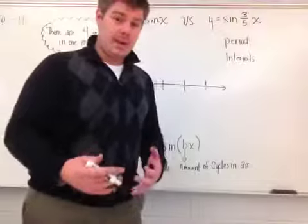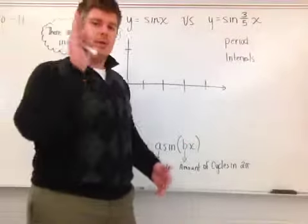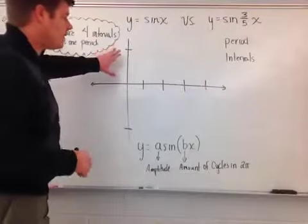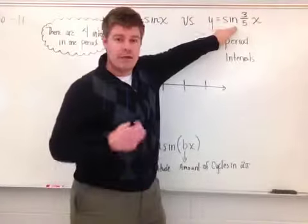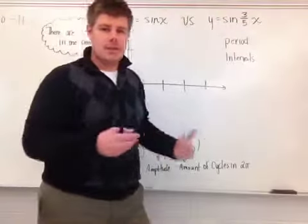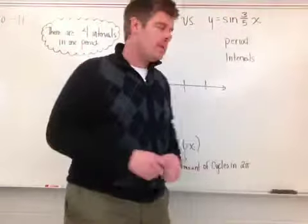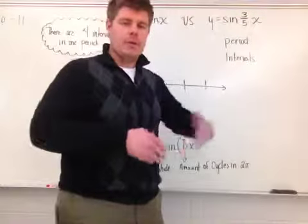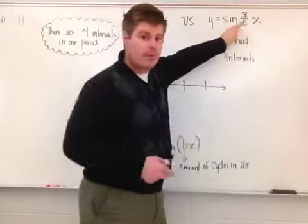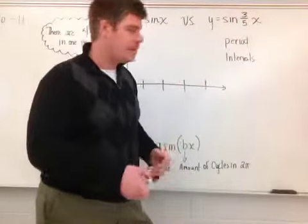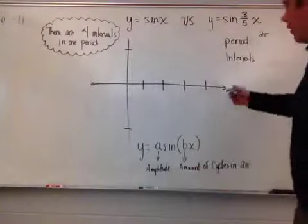This changes the period, because a period is the amount of time it takes for your function to complete one cycle. In this particular case, in a period of two pi, I am only having three-fifths of that cycle shown. But I'm not concerned with three-fifths — I want to know how long an entire cycle takes. One cycle is equivalent to one period, so from zero to two pi it's only three-fifths of the cycle.